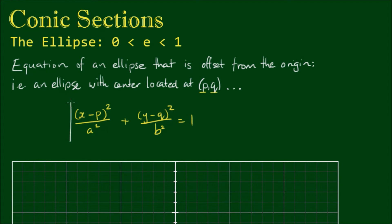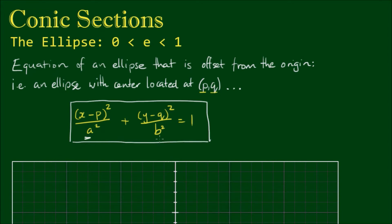As you can see, the equation still resembles the standard form. Here, the terms a and b still represent the semi-major and semi-minor axes respectively. The only difference is we have the x-coordinate of the center point subtracted from the variable x, and the y-coordinate of the center point subtracted from the variable y.